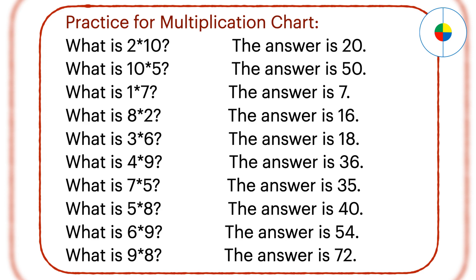What is 6 times 9? Any number multiplied by 9: the 10's position is the number minus 1, and the 1's position is its pair number. For 6 times 9, the 10's position is 6 minus 1 equals 5. The 1's position is the pair number of 6, which is 4. So the answer is 54.